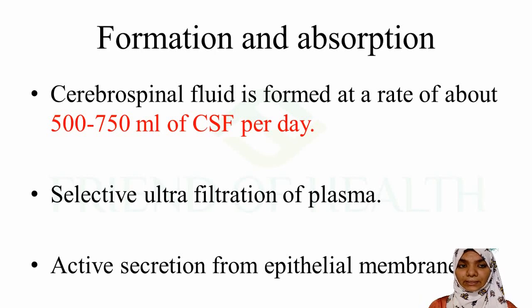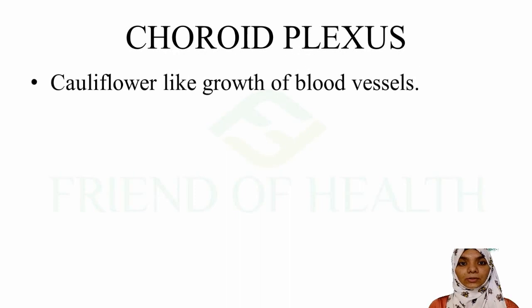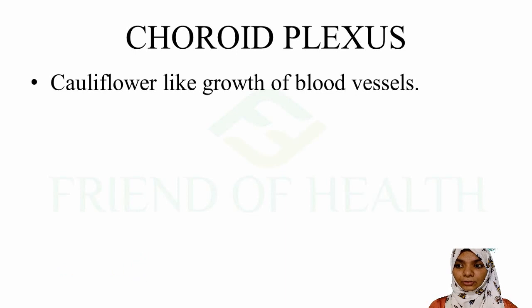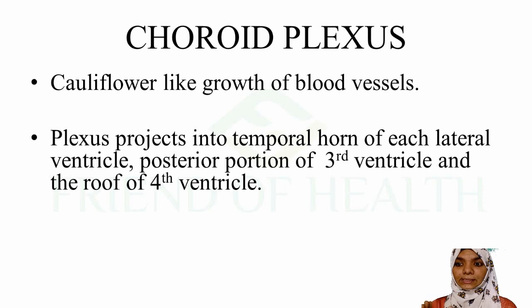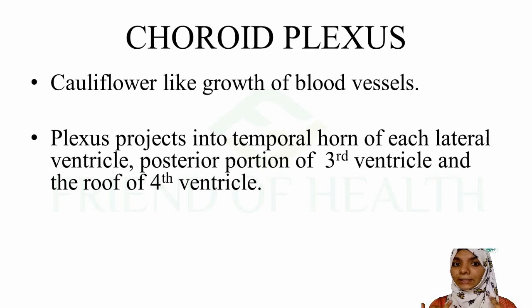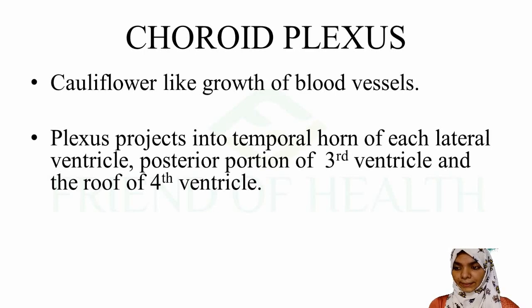The choroid plexus looks like a cauliflower-like growth of blood vessels arranged in the ventricles. This plexus projects into the temporal horn of each lateral ventricle, the posterior portion of the third ventricle, and the roof of the fourth ventricle. These details are often asked in exam questions - assertion/insertion, except questions, or match the following.